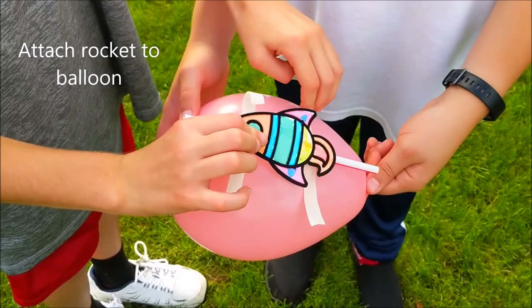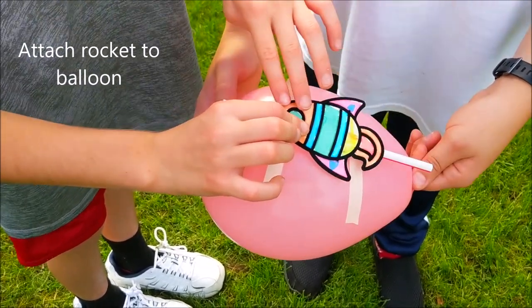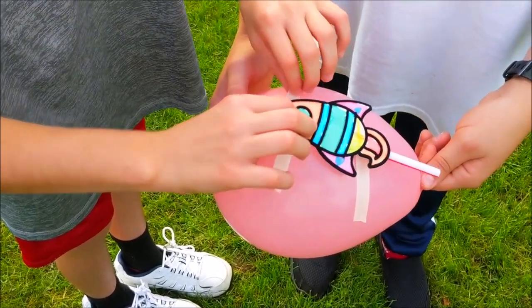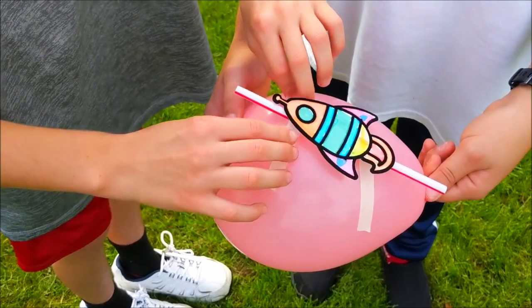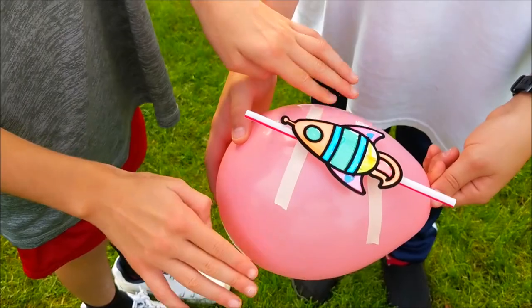Using your rocket parts on the straw, stick the masking tape to the inflated balloon very carefully, making sure you get a good stick from the tape by smoothing it onto the balloon. Make sure your helper doesn't let go of the balloon just yet.